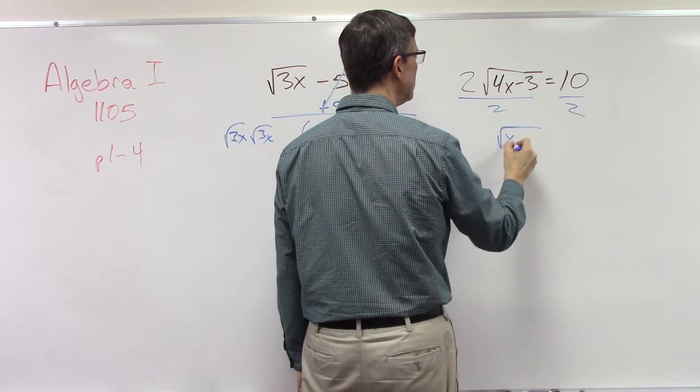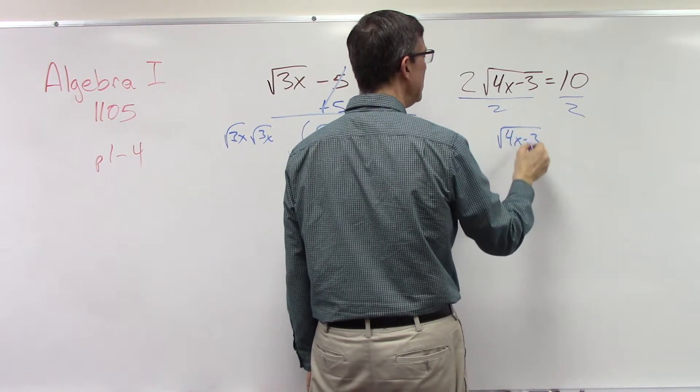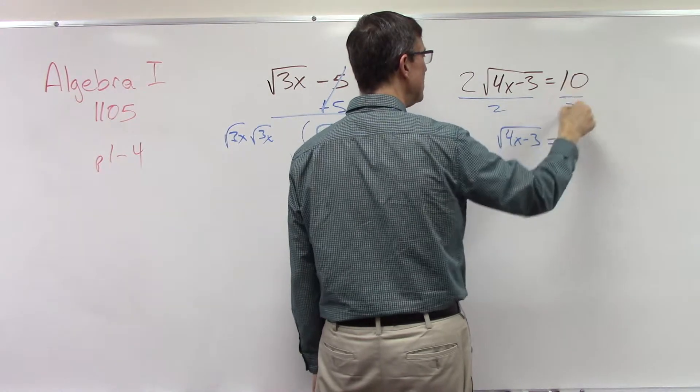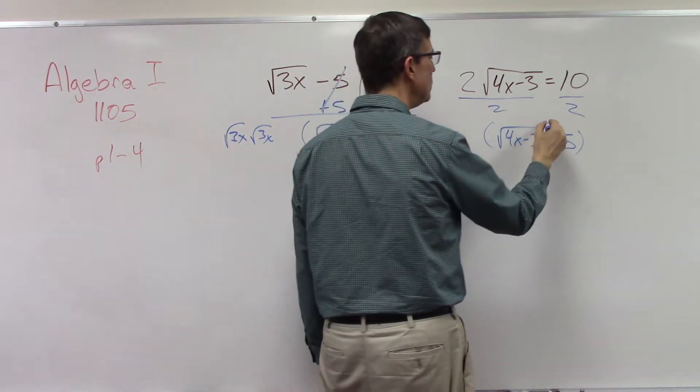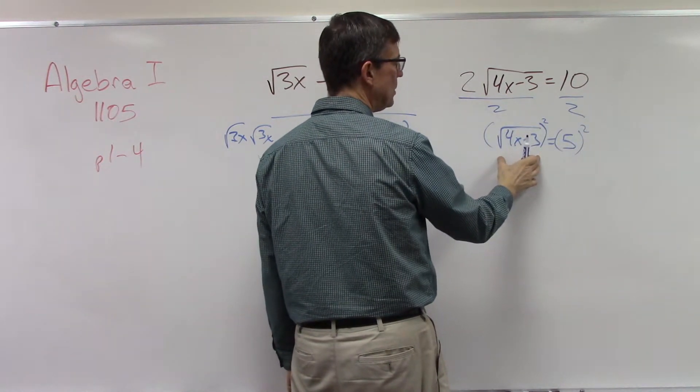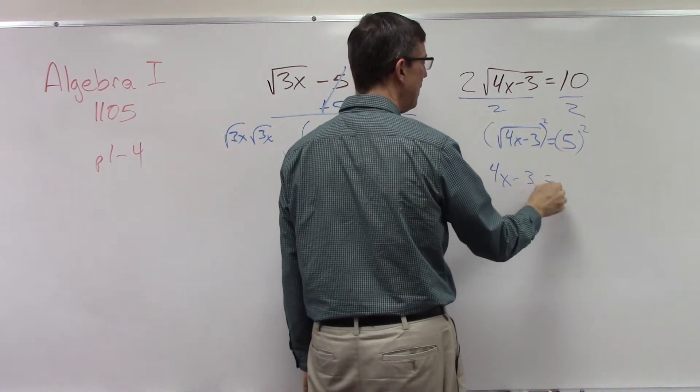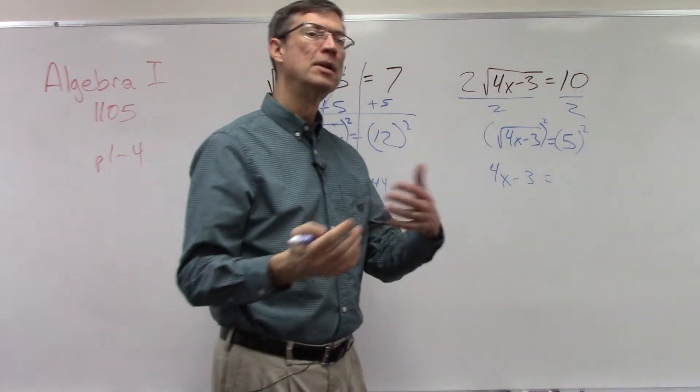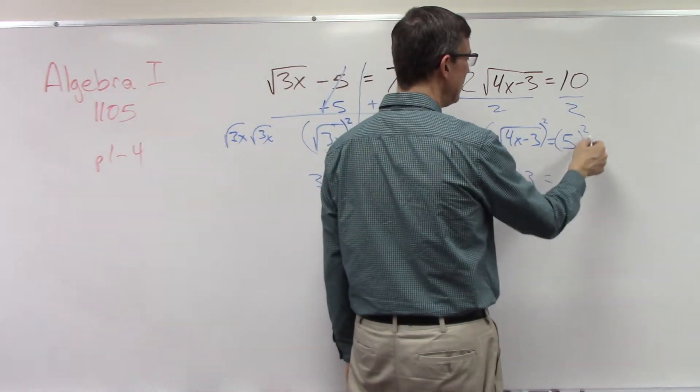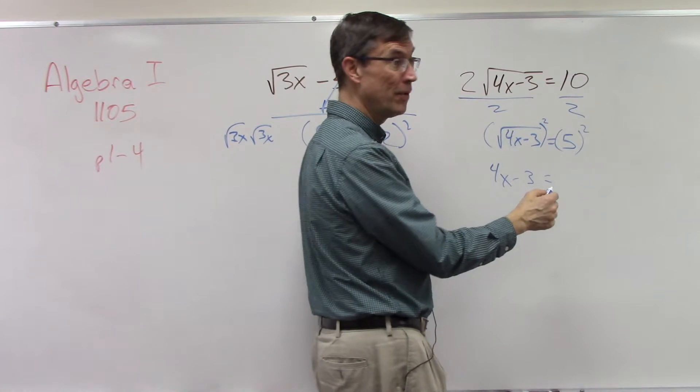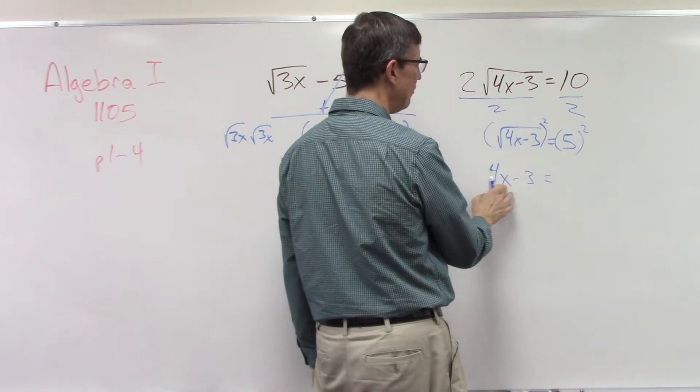Now put parentheses around both sides and square them. That causes this to pop out, so the 4x minus 3 pops out from under the radical because the square root of 4x minus 3 times the square root of 4x minus 3. This equals - and then the 5 squared is not 10, right? It's 25. Now it's just like an algebra half problem. You just add the 3 to both sides, divide by 4, and you can finish that problem.